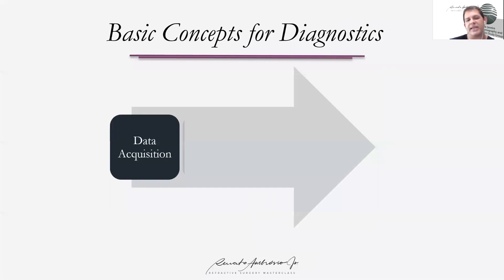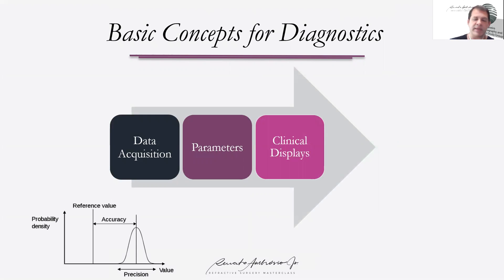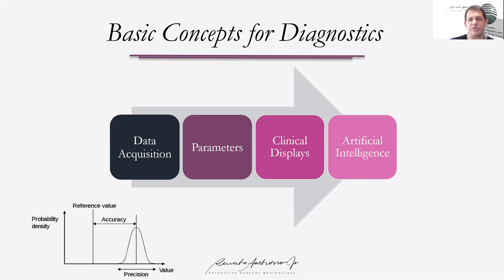It's important to understand data acquisition parameters. We need to have accuracy and understand the difference between accuracy and precision. Accuracy is how close the measurements are to the reference value, which is the gold standard. Precision is the repeatability. With these robust parameters we can develop displays, and artificial intelligence becomes a very important tool for us to handle this large amount of information. Multimodal imaging gives you a lot of information and artificial intelligence provides a very powerful and clever analysis.